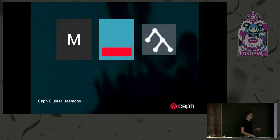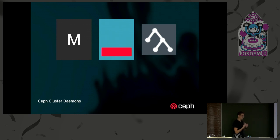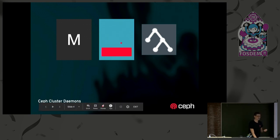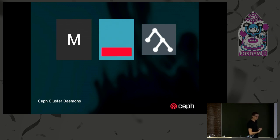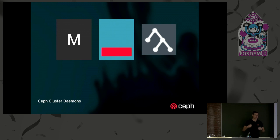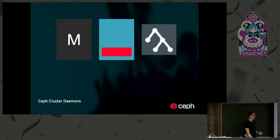I assume you all basically know about CEPH, but it's a distributed object storage system. We have three daemons, although only two of them matter today. We have the object storage daemons or OSDs, which are responsible for storing data and serving read and write IO to clients. When something changes the cluster state, they make sure all the data is located on all the OSDs it's supposed to be on, maintaining our replication and durability guarantees. We have the monitors, which keep track of the other participants in the cluster. They maintain a series of cluster maps — in particular, the OSD map, which says what OSDs are part of the cluster, whether those OSDs are up or down, and what their addresses are.